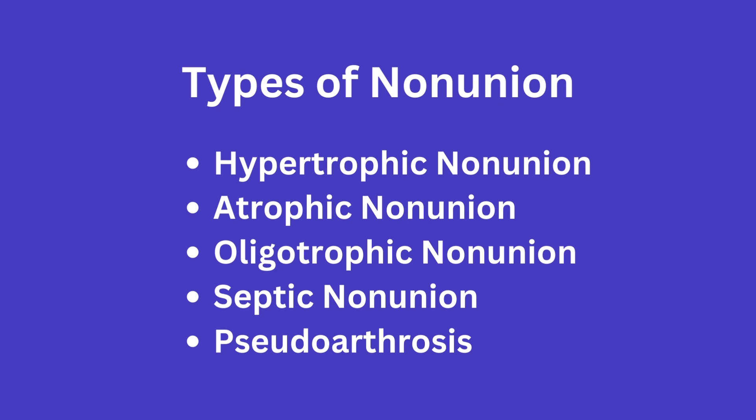The types we will briefly cover in this video are hypertrophic, atrophic, oligotrophic, and septic non-union, along with pseudoarthrosis.